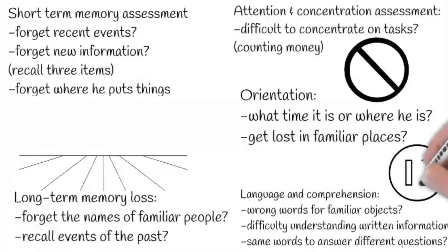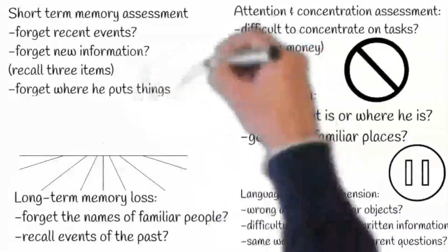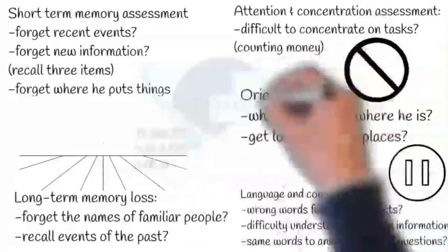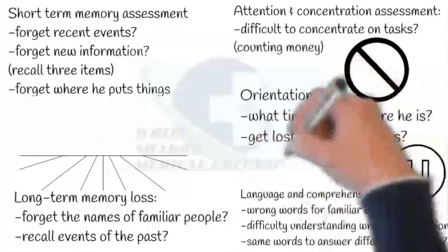Does he use the wrong words for familiar objects? Does he have difficulty understanding written information? Does he use the same words to answer different questions? In the last, ask: does he have difficulty in performing activities like dressing, washing, or using household equipment?